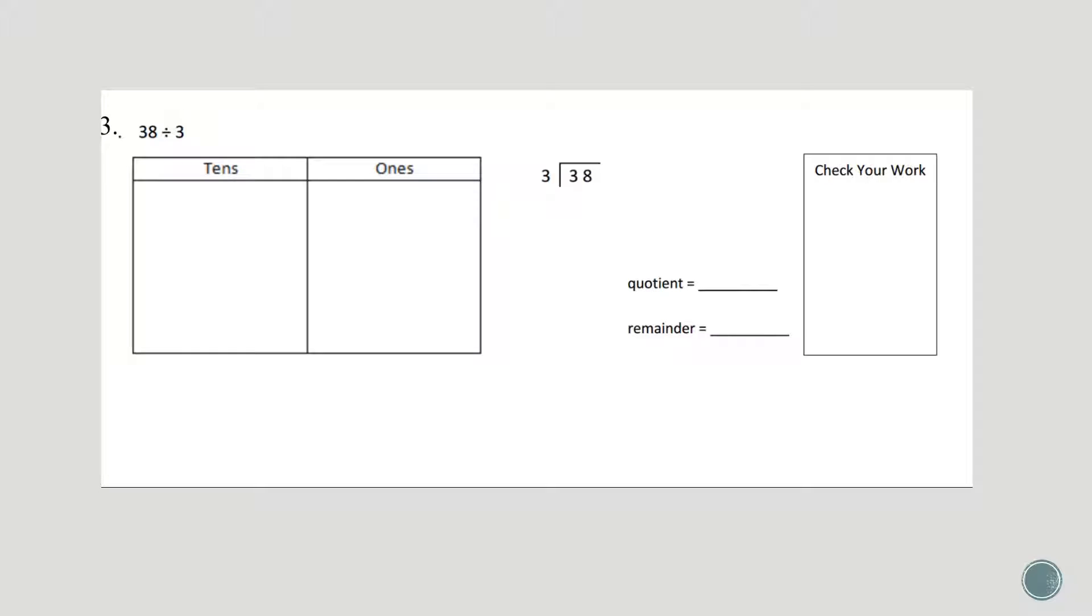Let's try our steps again using a two-digit number, 38 divided by 3. So first things first, I want to put 38 onto my place value chart. So I have 3 in the tens and 8 in the ones.